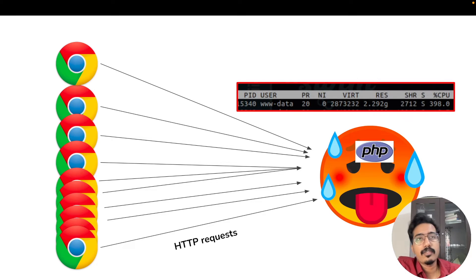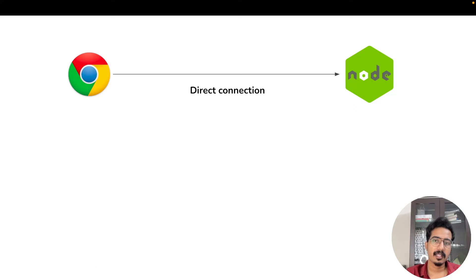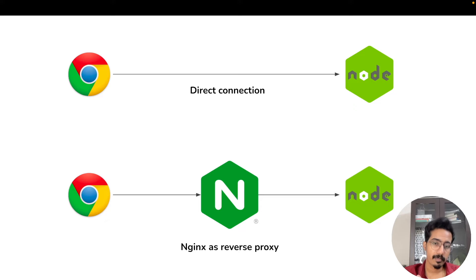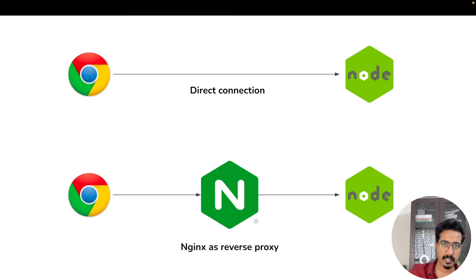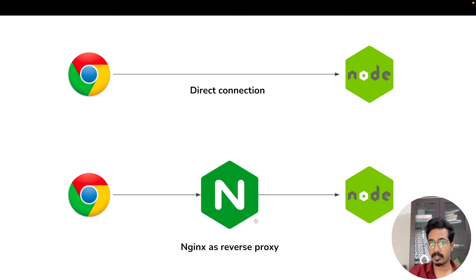If you increase RAM and CPU you can handle more connections, given that you've also increased the nofile limit. There are two ways to serve clients from a Node backend: the Node.js app can directly serve clients on port 3000, or you can use a reverse proxy like nginx. Typically the client connects to nginx, which then proxies the request to your Node.js app.